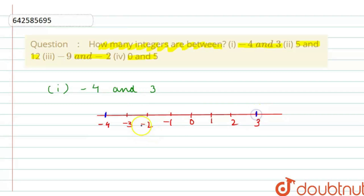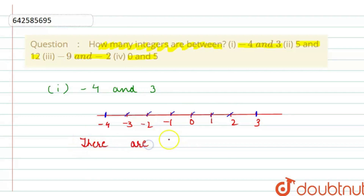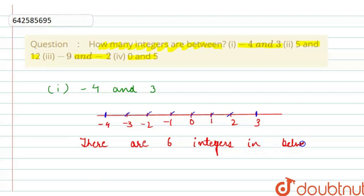So we have to count the integers in between. It's 1, 2, 3, 4, 5, 6. So there are 6 integers in between minus 4 and 3.